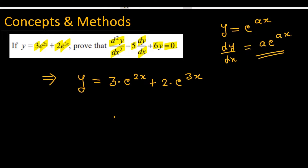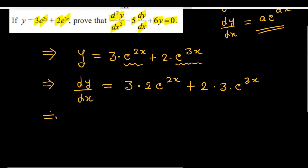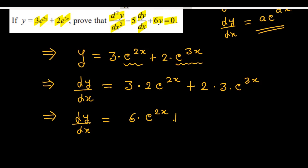First, we differentiate the given equation. Differentiating y = 3e^(2x) + 2e^(3x), we get dy/dx = 3 × 2 × e^(2x) + 2 × 3 × e^(3x), which simplifies to dy/dx = 6e^(2x) + 6e^(3x).